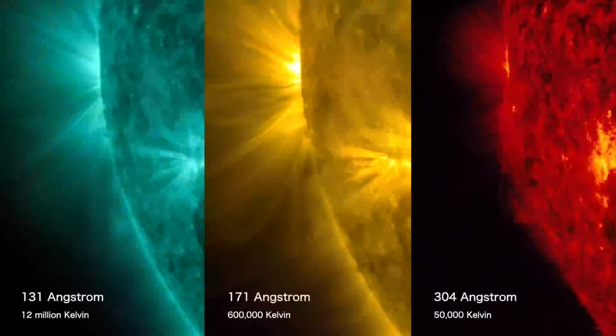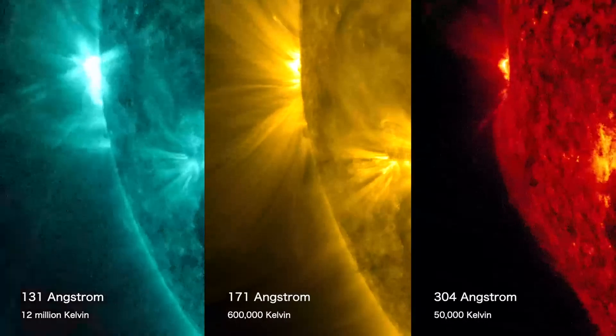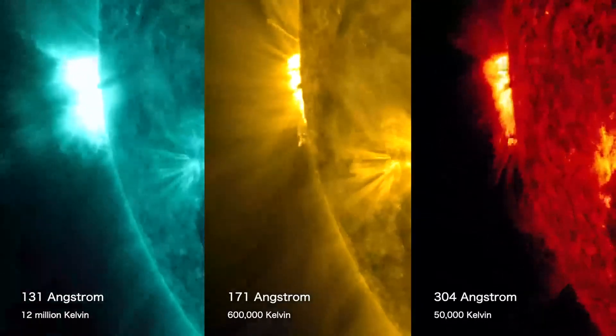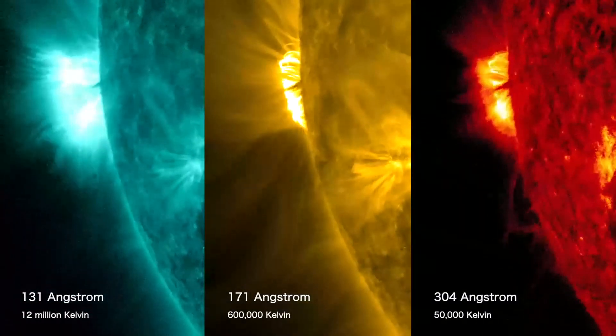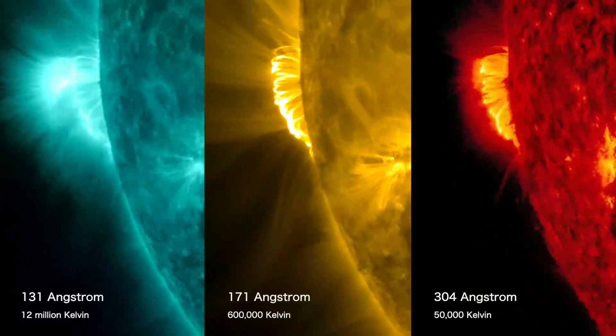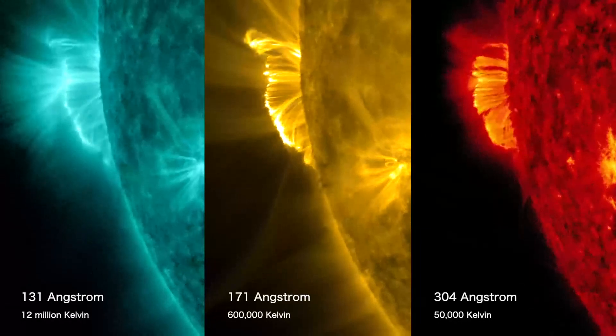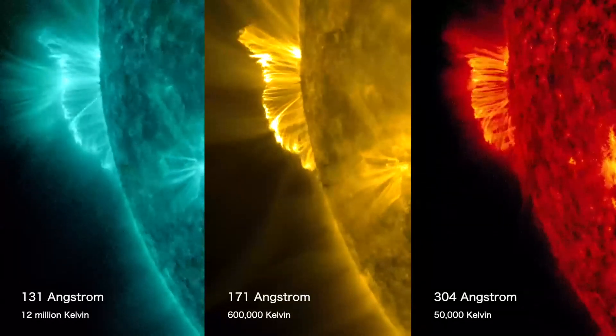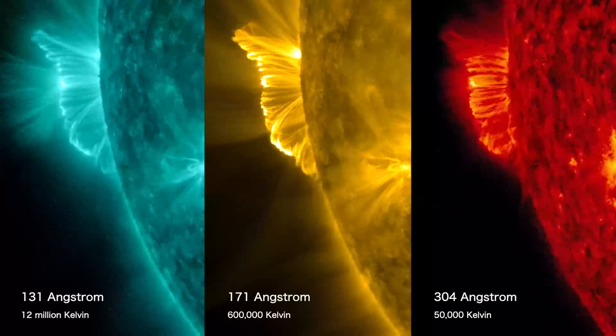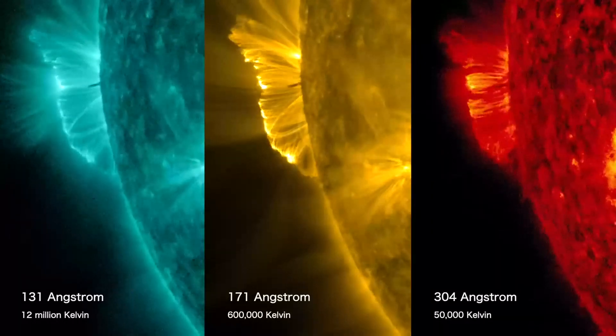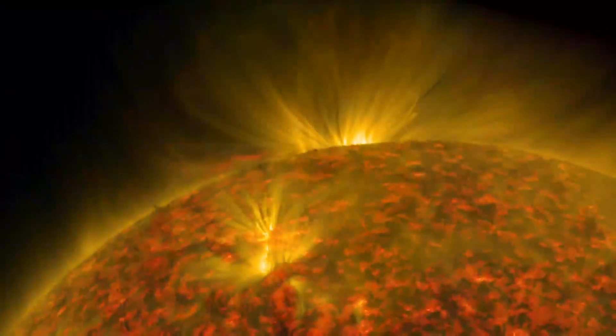NASA tracks sunspots to determine and predict the progress of the solar cycle and ultimately solar activity. Sunspots are cooler regions on the Sun caused by a concentration of magnetic field lines. Sunspots are the visible component of active regions, areas of intense and complex magnetic fields on the Sun that are the source of solar eruptions.